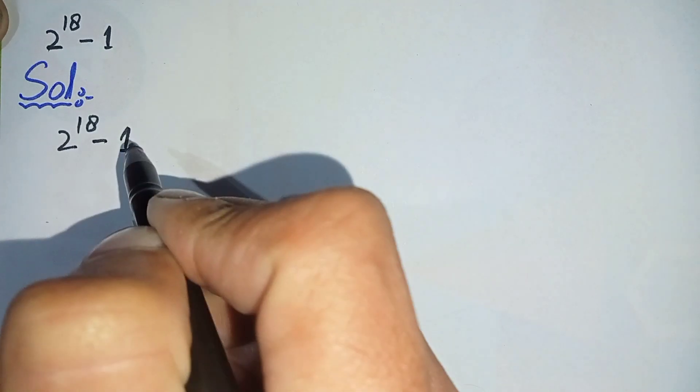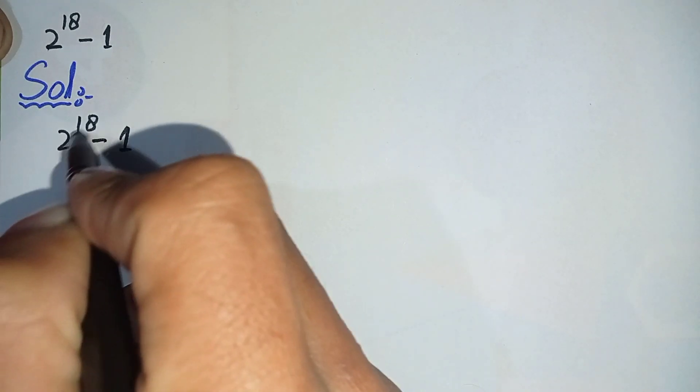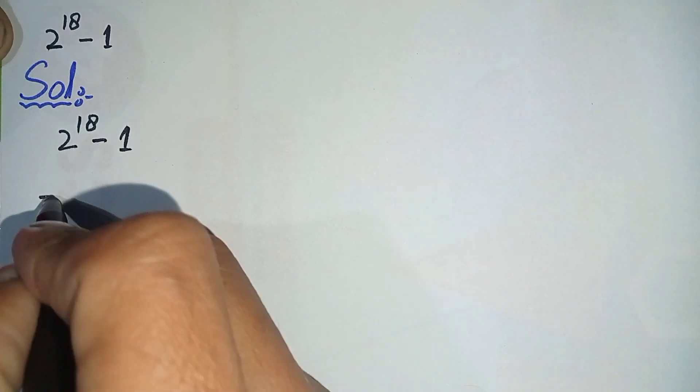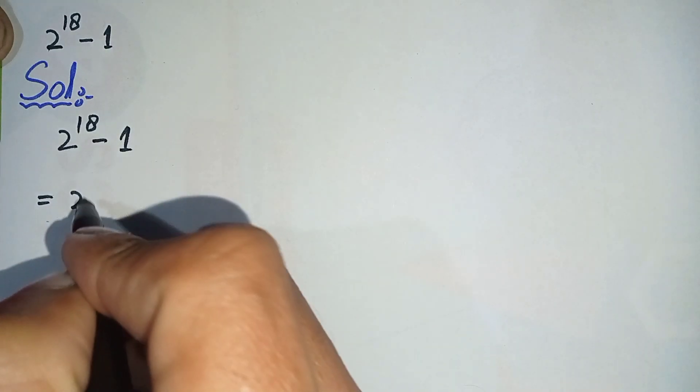Now in the next step we can write this 2 raised to power 18 is equal to 2 raised to power 9 times 2, which is 18, minus 1.